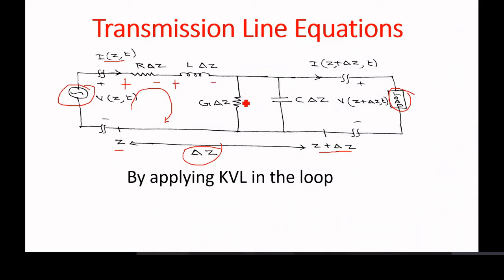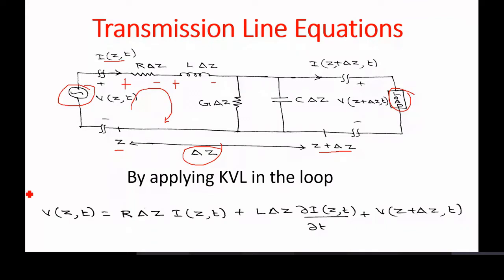Since these two elements are in parallel, the voltage across the parallel elements is the same, so the voltage across the conductance and capacitor will be v(z + delta z, t). Applying KVL in the loop, we get: v(z, t) = r·delta z·i(z, t) + l·delta z·(∂i/∂t) + v(z + delta z, t).